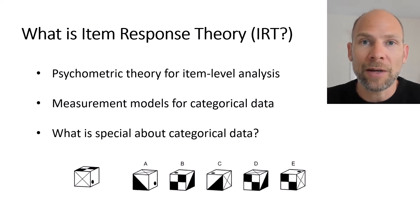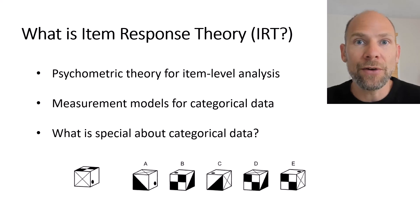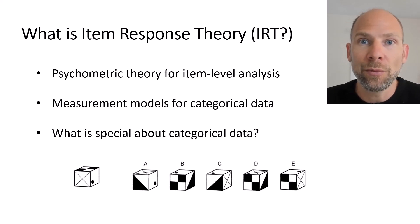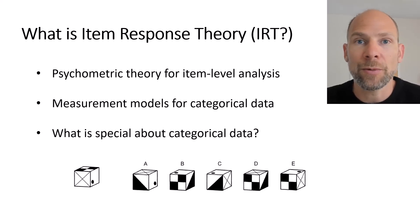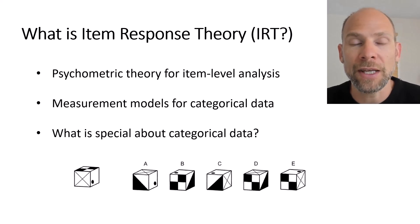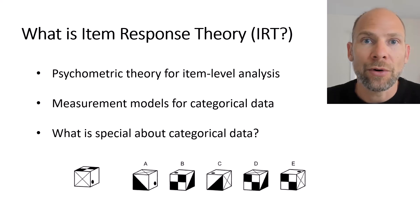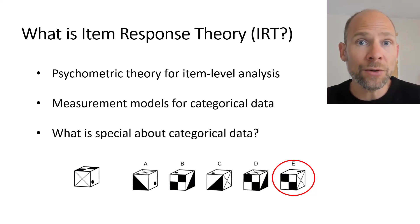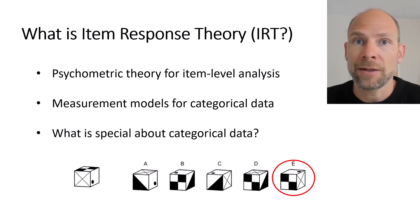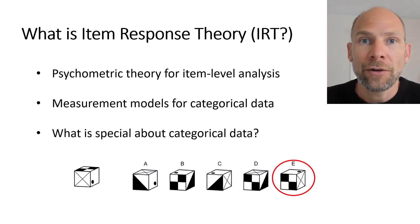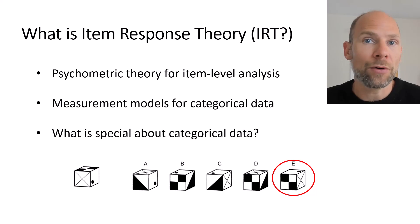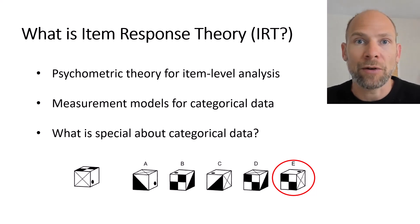Here's an example of an item we might analyze with item response theory — an item from the so-called cube comparison test, a measure of spatial abilities. You compare the cube on the left-hand side to five alternatives A through E on the right-hand side and find the one that can be rotated into congruence with the target. In this case the answer is E. These items are typically scored as zero for incorrect and one for correct.